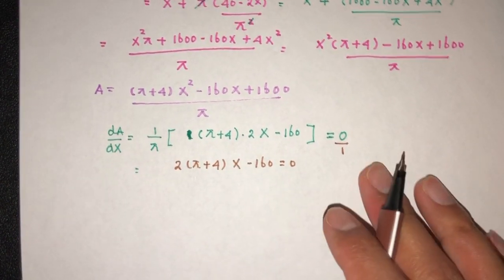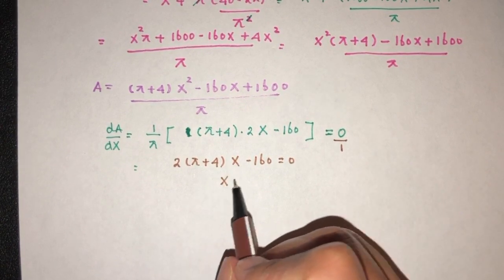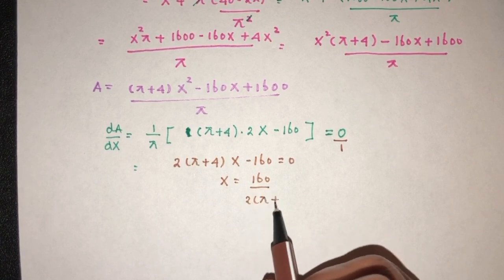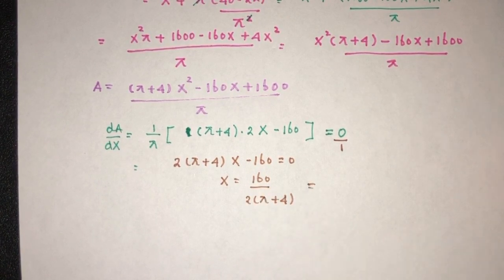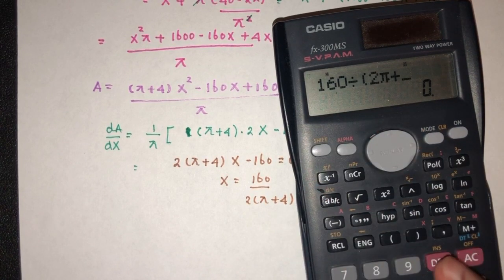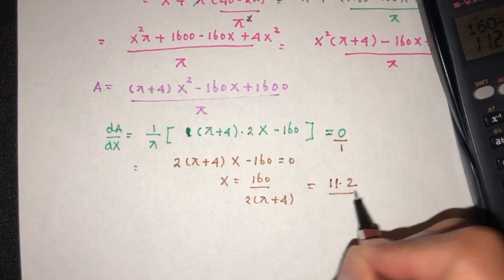Which means we have to find the value of x here. So x will be 160 divided by 2(π+4). Let's see what do we get. 160 divided by 2π plus 8. That will be 11.2. Correct you.